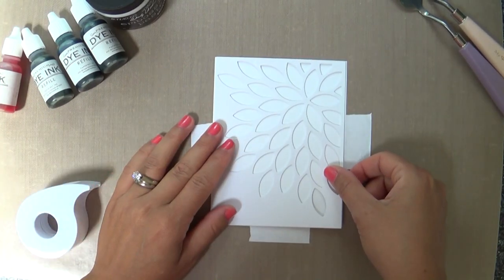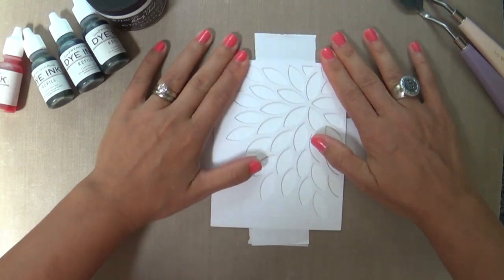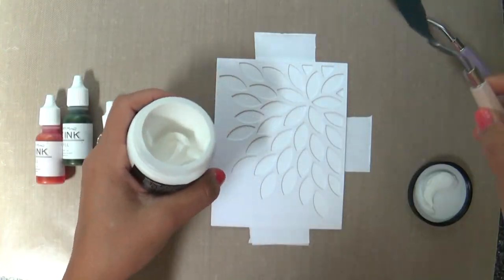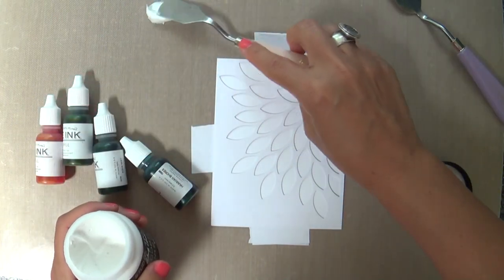So I layered two of them together just to give a little thickness and now I'm adhering this over a card front with some post-it tape. Now here's my white embossing paste. This is Wendy Vecchi, I'm not sure how you say that name.